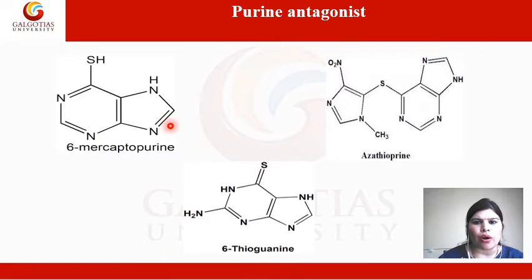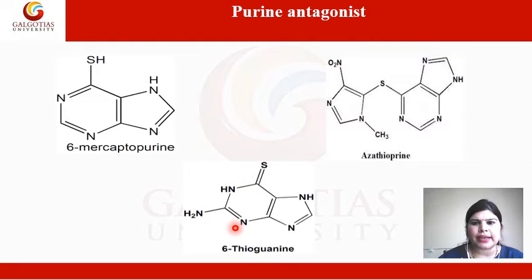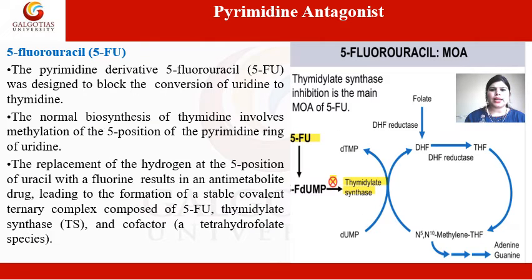Looking at the structure of purine antagonists: In 6-mercaptopurine, the hydroxyl group is replaced with a thiol group at the 6th position. The next drug is 6-thioguanine, which is also incorporated into RNA, and its deoxyribose antimetabolite is incorporated into DNA. The next drug is azathiopurine, a heterocyclic derivative of 6-mercaptopurine, designed to protect it from catabolic degradation. It has not significantly better but comparable anti-tumor activity to 6-mercaptopurine, and it is used as an immunosuppressant.